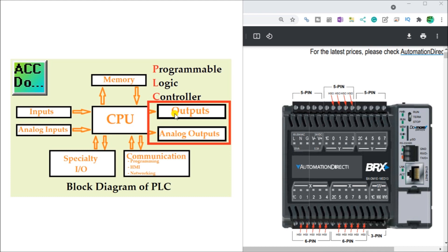Lights, relays, solenoids, and speed references are just a few examples of PLC outputs. Operator outputs through a human machine interface or HMI are also a form of PLC outputs that we'll be discussing later. Physical outputs are what we'll be looking to wire and understand now.